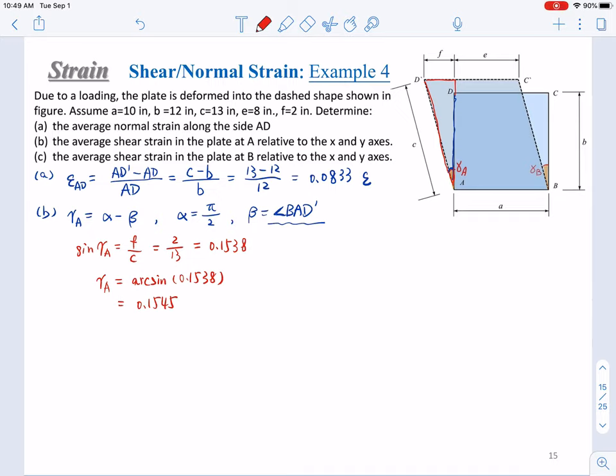But now we just need to determine the sign of this shear strain. Is this positive or negative? You can see that from alpha to beta, from alpha to beta in this case at point A, from pi over 2 to beta, that is BAD prime. This is an angle larger than pi over 2. When this angle becomes larger, the shear strain will be negative. Because beta is larger than alpha, so gamma A will be negative 0.1545 radian. Okay? This is the correct report.